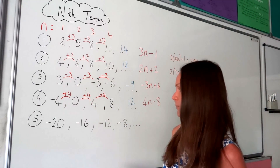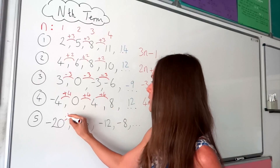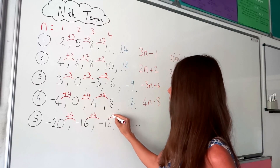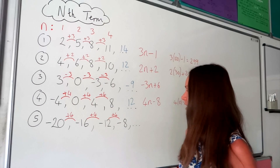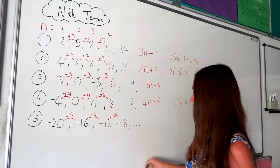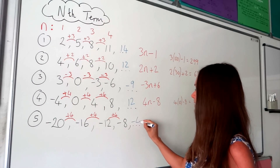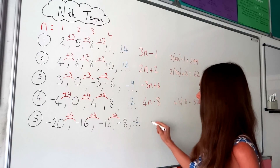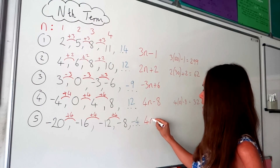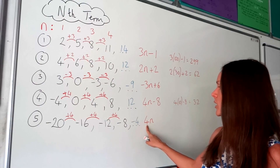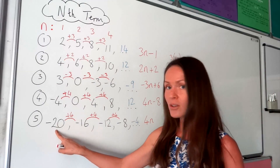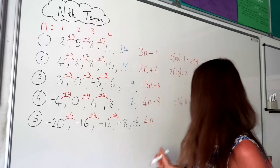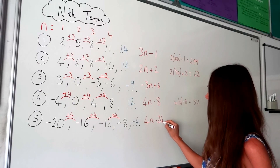For the last one, we're adding 4 each time again. To find the next number in this sequence, if I add 4 to this number, I get negative 4. So because we're adding 4 each time, I write down positive 4n. How do you get from 4 down to the first number in your sequence? You have to subtract 24. So the formula for the nth term is 4n minus 24.